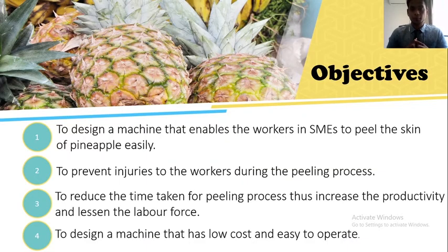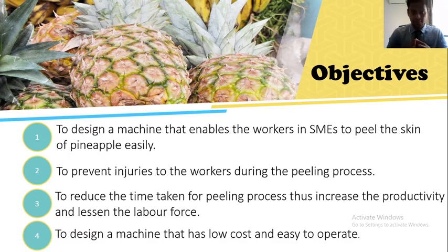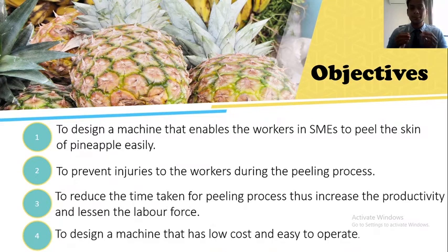To overcome these problems, we have come up with our objectives. The first objective is to design a machine that enables workers in SMEs to peel pineapple skin easily. The second is to prevent injuries to workers during the peeling process. The third is to reduce time taken while increasing productivity and reducing labor force. The fourth is to design a machine that is affordable and user-friendly.